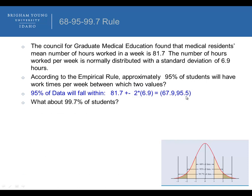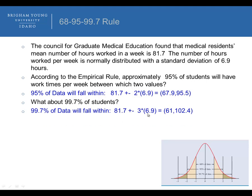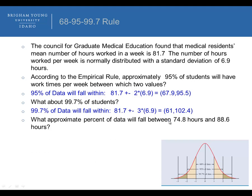What about 99.7% of the students? Instead of two standard deviations, it would be three standard deviations away from the mean. Doing the mathematics gives a lower bound and an upper bound of 61 and 102.4. So 99.7% of the students would fall between 61 and 102.4.